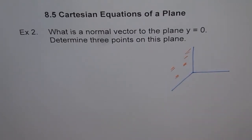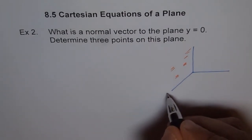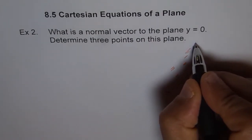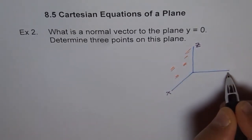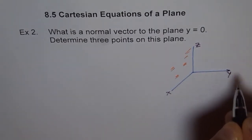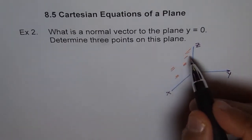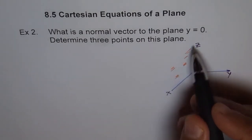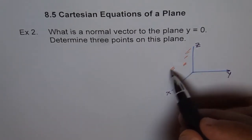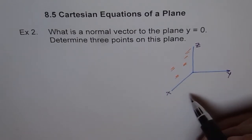And what is this plane? This plane for us is the x, z plane. Now we are in the x, z plane. So y equals 0 also means x, z plane. Any point on the x, z plane.